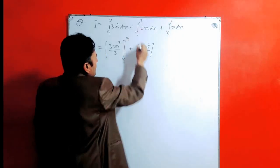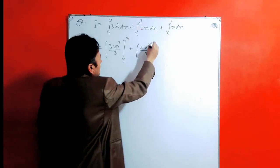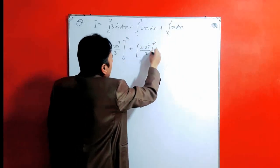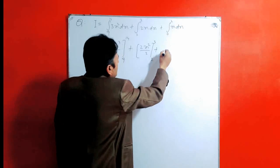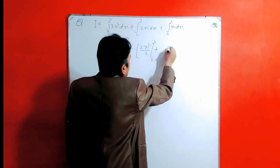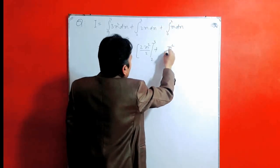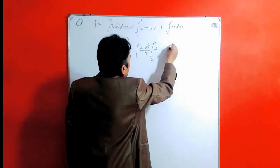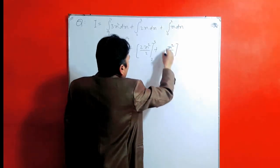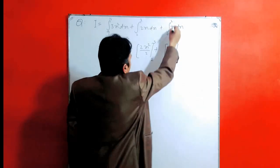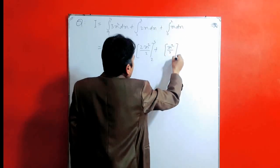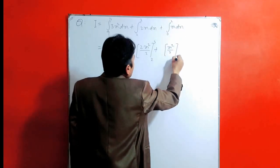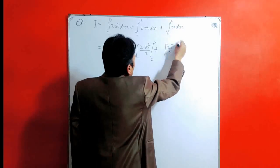Then we will take its limit from 2 to 3, and then we will take the integration of x dx, so it will be x squared by 2, after applying the power rule that is 1 plus 1, and then we will take its limit from 0 to 2.